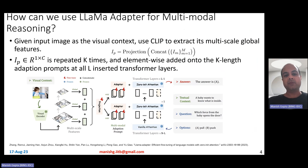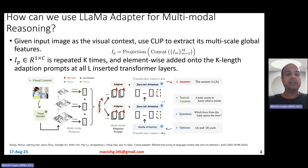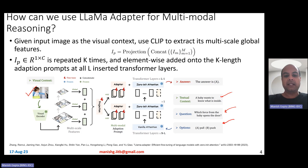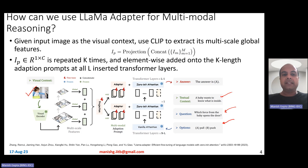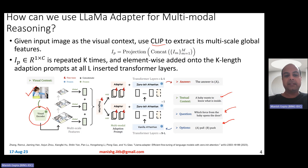How can we use LLaMA adapter for multimodal reasoning? Given an input image as the visual context — which is the case in a VQA task — for example, here is an image as input with a question: a baby wants to know what is inside, and the question asks which force from the baby opens the door, with options A: pull and B: push. The expected answer is A: pull. The LLaMA adapter takes the visual content through a visual encoder — for example, CLIP — which gives you multi-scale features from the image.